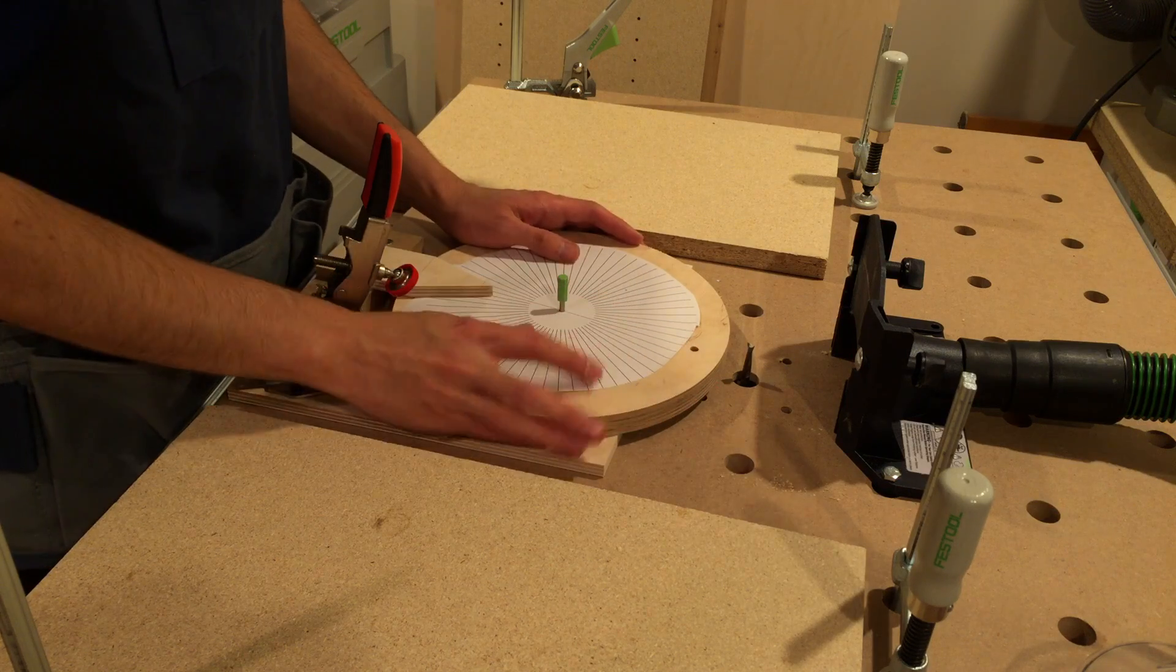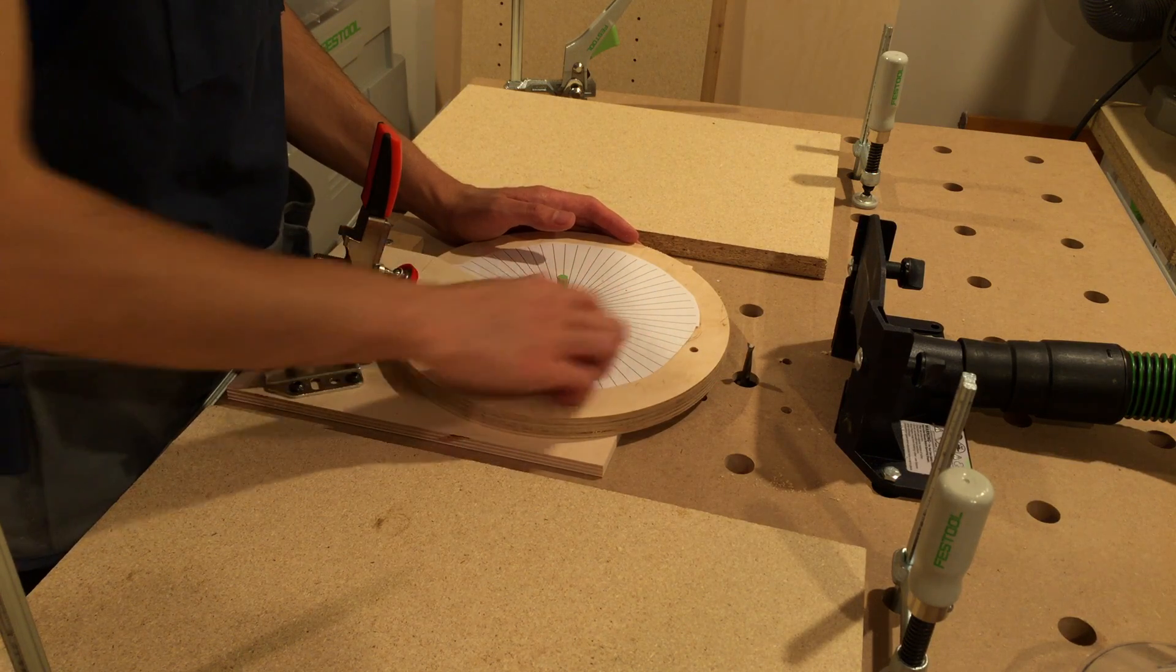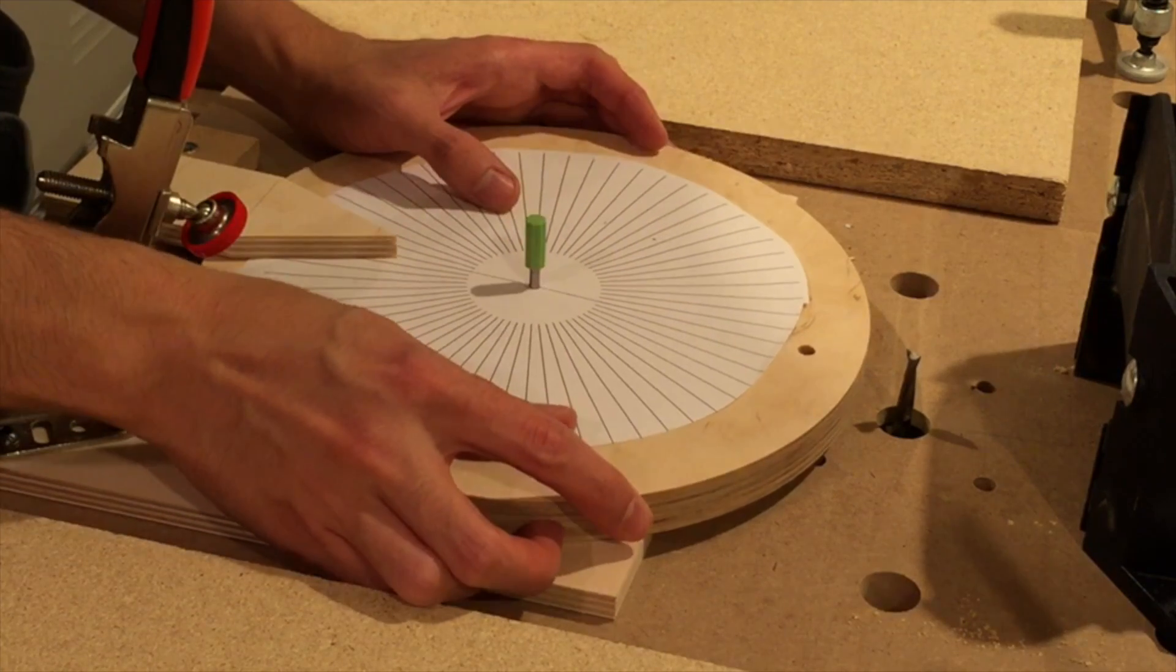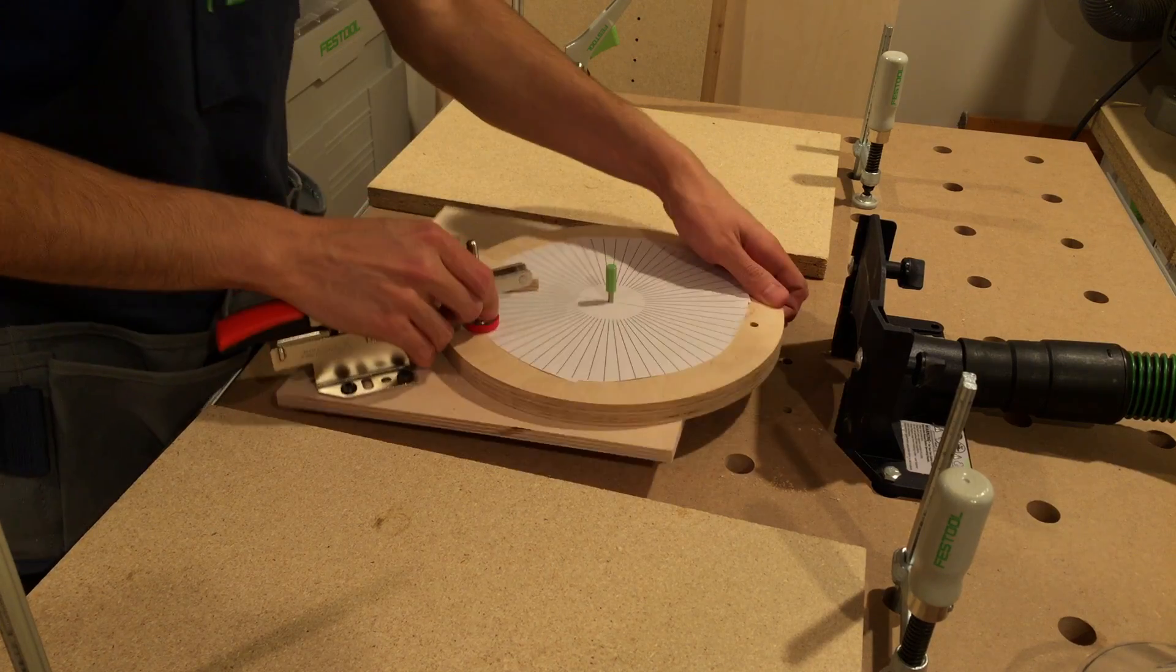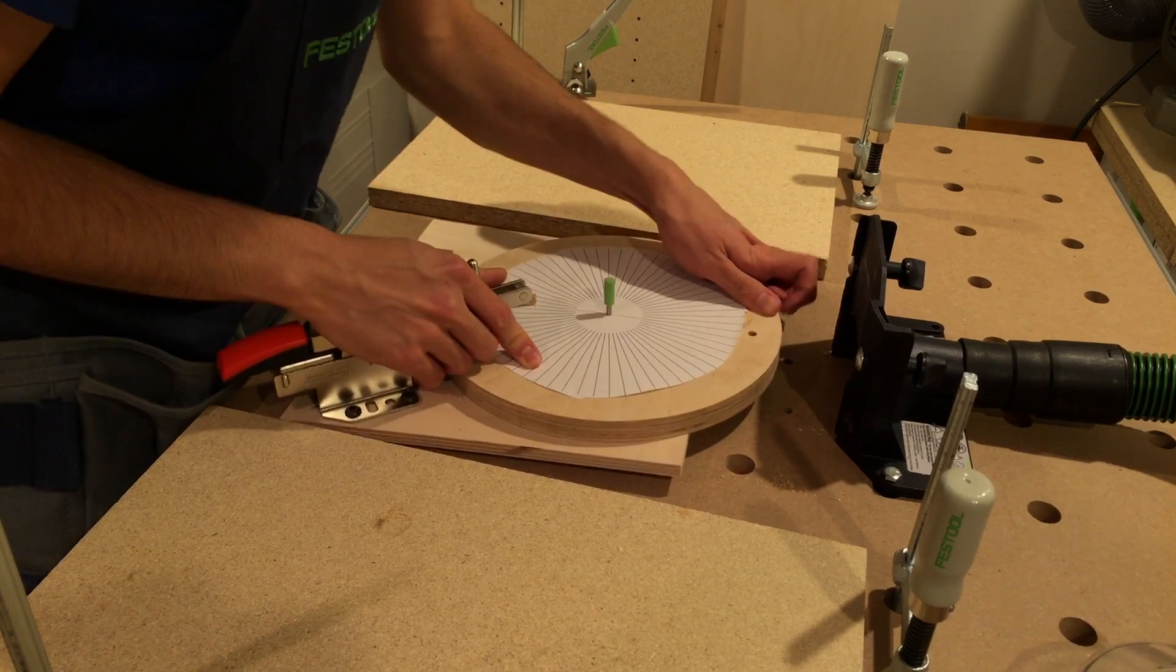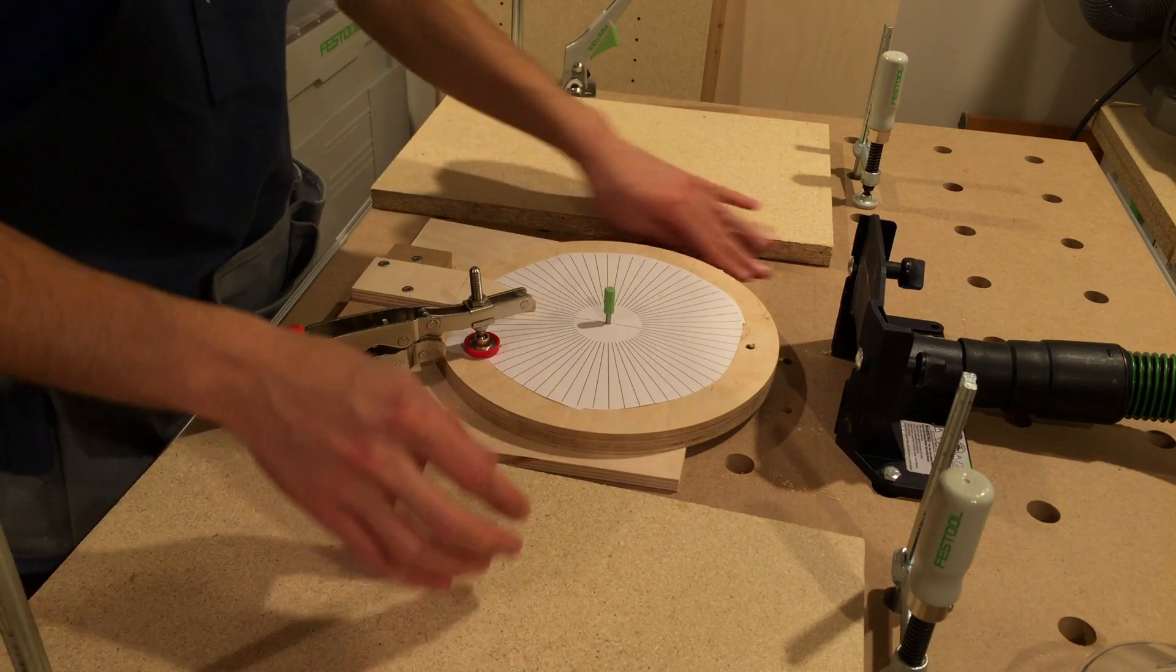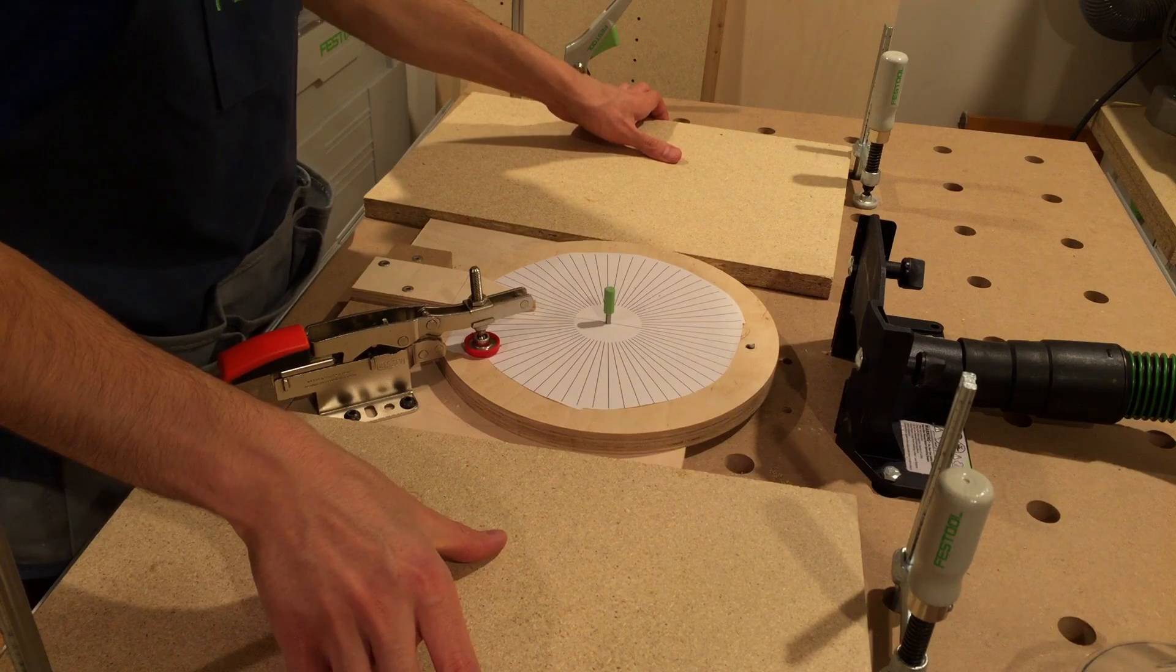To set up for cutting gear teeth, align the pointer exactly opposite the quarter inch hole. Clamp in place. Slip this right over the bit, and just butt up some fences to the trapezoid and secure them in place.